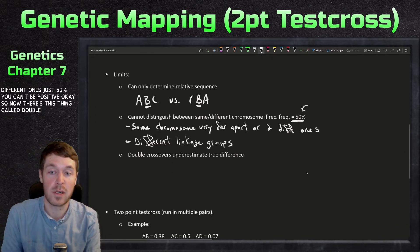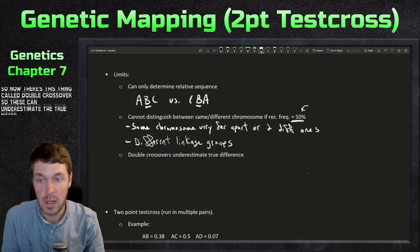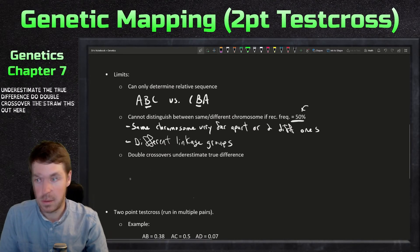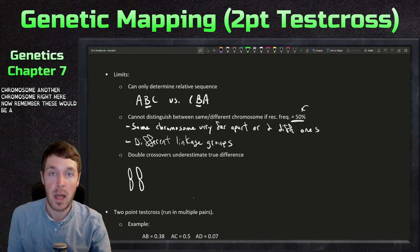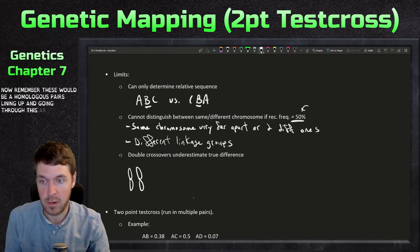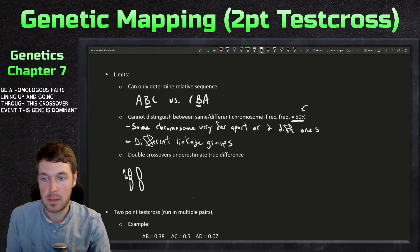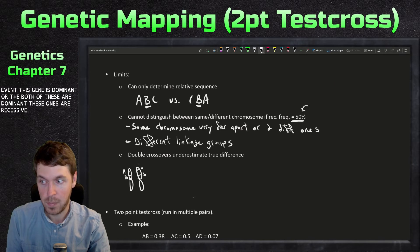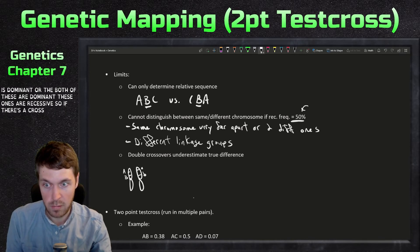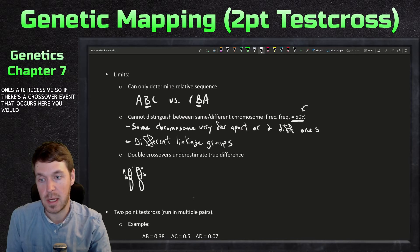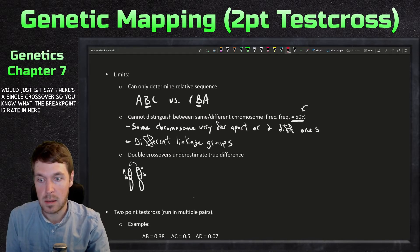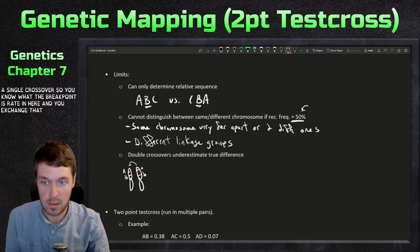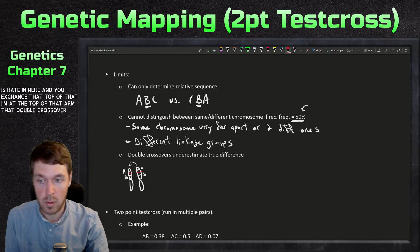Now there's this thing called double crossover. These can underestimate the true difference. So double crossover, let's draw this out here. Let's have one chromosome right here, another chromosome right here. Now remember these would be homologous pairs lining up and going through this crossover event. This gene is dominant or both of these are dominant. These ones are recessive. So if there's a crossover event that occurs here, let's say there's a single crossover. The break point is right in here and you exchange that top of that arm with the top of that arm.